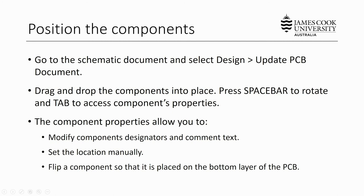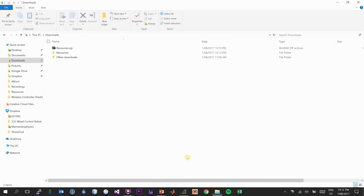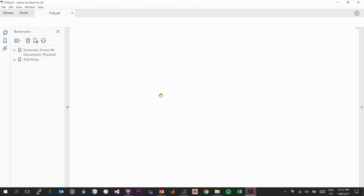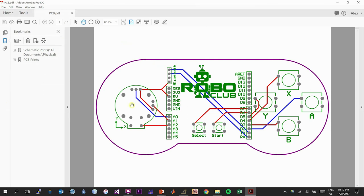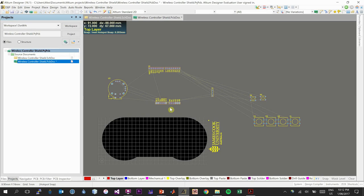We position the components by dragging and dropping them into place. Press Spacebar to rotate components and press Tab to access important properties — you can modify component designators and comment text, make text larger or smaller, or hide it. You can also set location manually with X and Y coordinates, or flip a component to the bottom layer. Looking at the example PCB, let's put the joystick to the left, shield in the middle, Bluetooth at the top, the logo in the middle, and the buttons on the right.